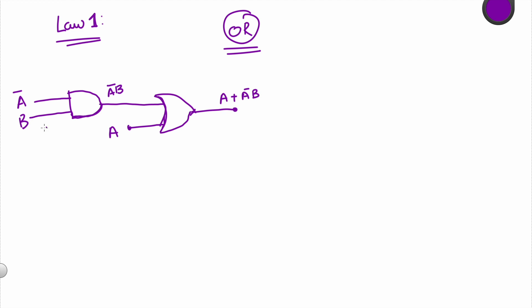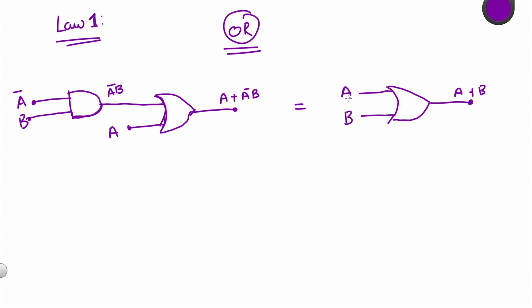When we do all of this, the actual output is A plus A complement B. The law states that instead of doing all of this, this is just equivalent to doing A plus B. So instead of doing the OR of the AND of the complement of that variable with another variable, you can just do the OR of the two variables.